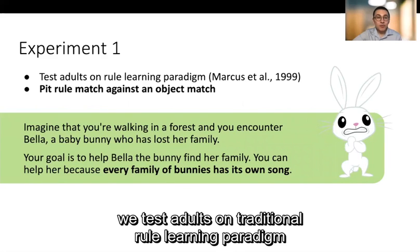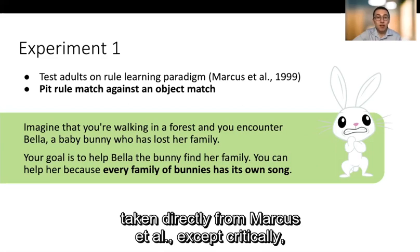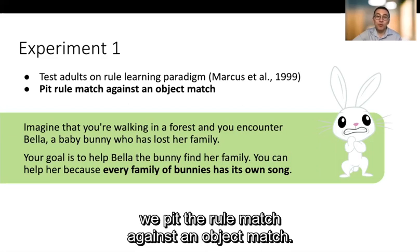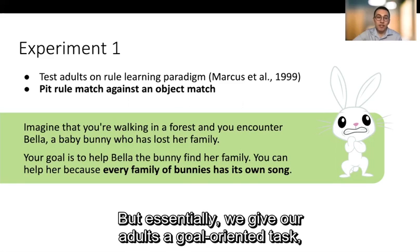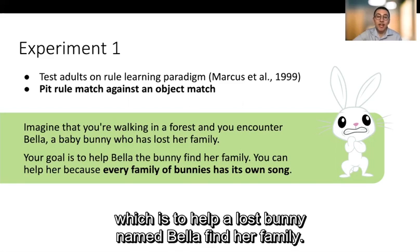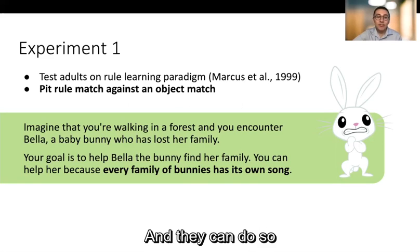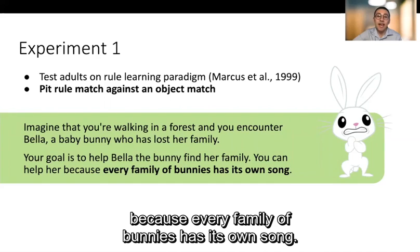To test this we test adults on a traditional rule learning paradigm taken directly from Marcus et al except critically we pit the rule match against an object match and I'll discuss this a bit later but essentially we give our adults a goal oriented task which is to help a lost bunny named Bella find her family and they can do so because every family of bunnies has its own song.